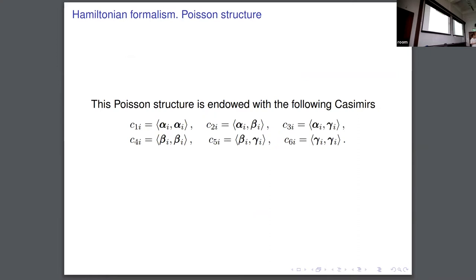This Poisson structure is also associated with some Casimirs. By fixing those Casimirs, we are going to find the phase-space of the system. Because the Poisson manifold, before reduction, has dimension up to 18 times N, which is not the phase-space of the system. So in order to find the phase-space, you have to use the symplectic leaves of this Poisson structure.